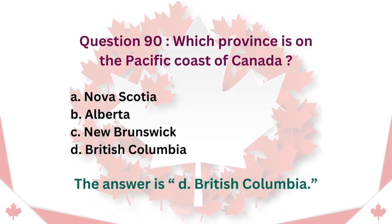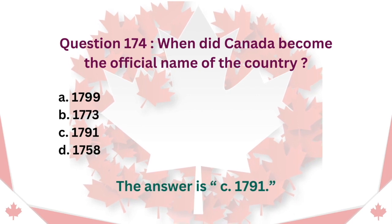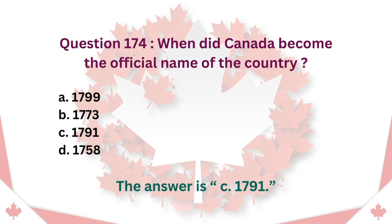Question 90: Which province is on the Pacific coast of Canada? A. Nova Scotia. B. Alberta. C. New Brunswick. D. British Columbia. The answer is D. British Columbia.